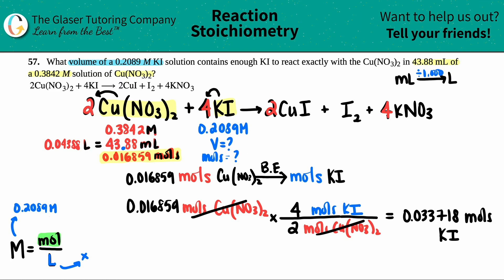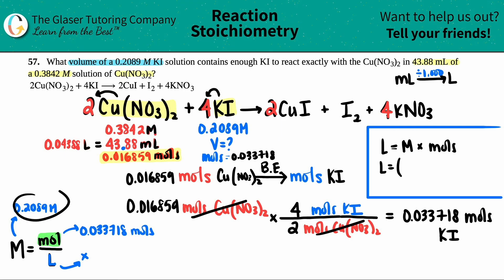Now we know the moles - 0.033718 moles - and I can solve for the liters. I'm going to say that liters equals molarity times moles. My liters equal the molarity 0.2089 times the moles 0.033718.